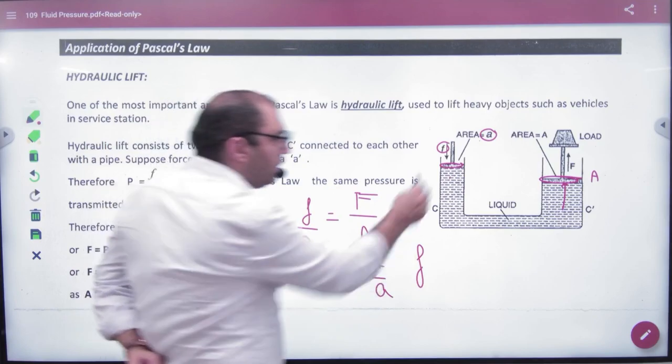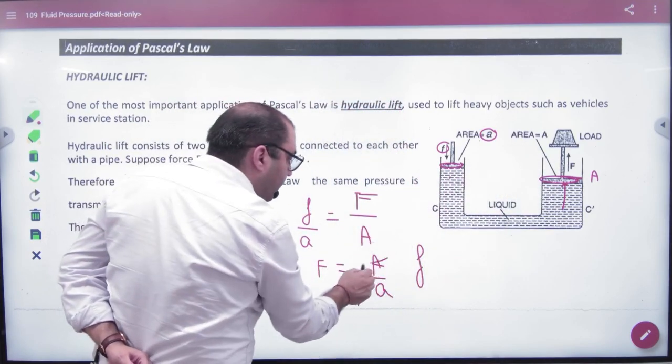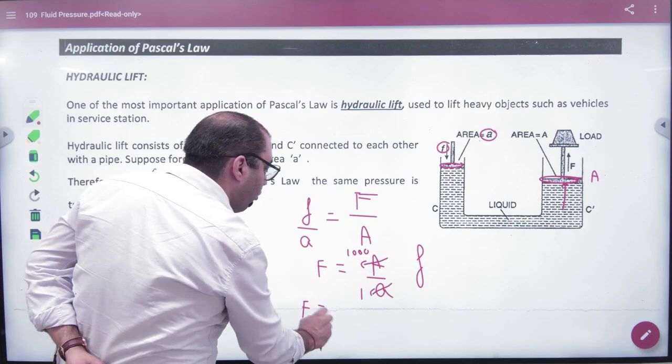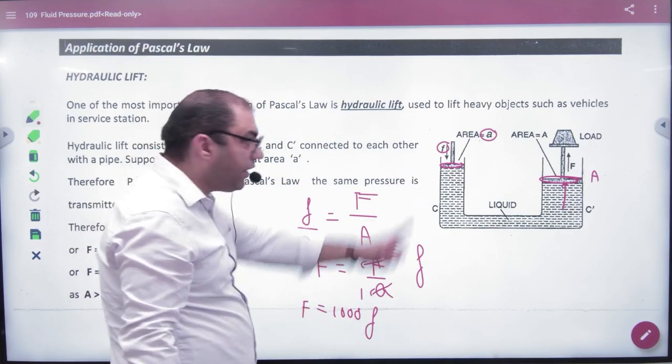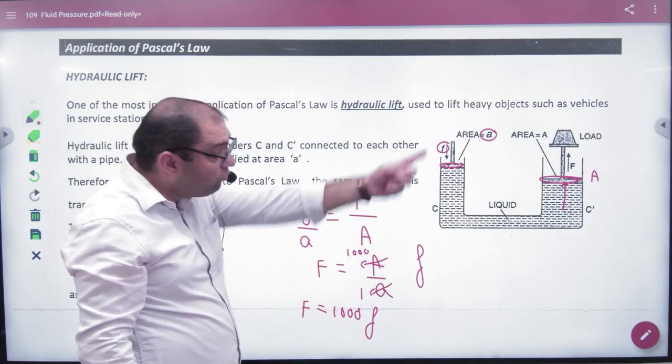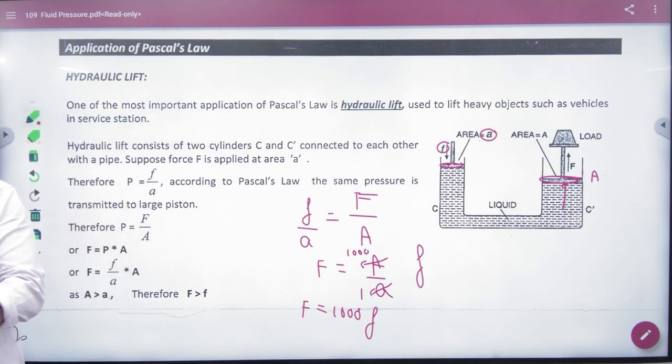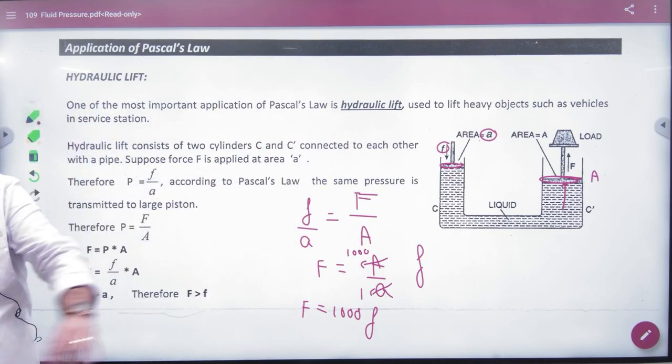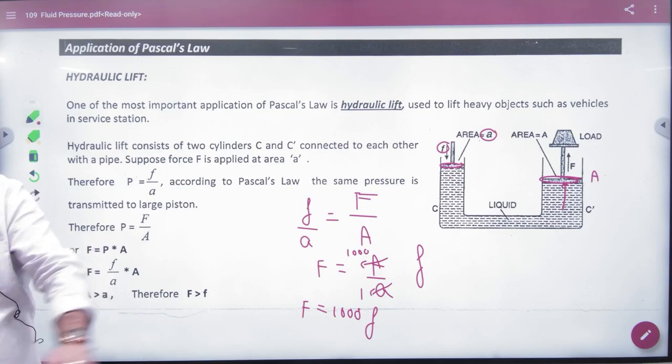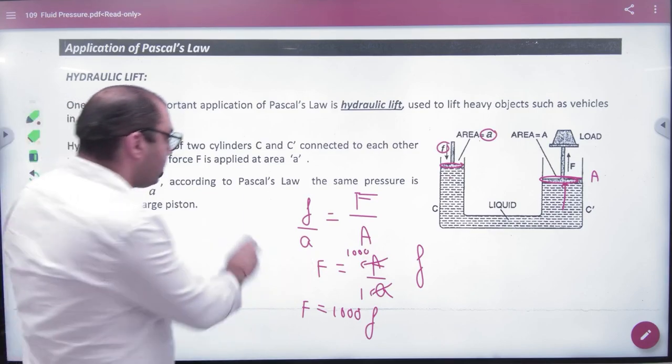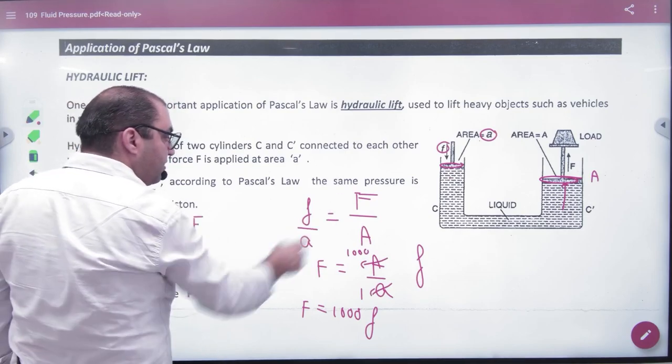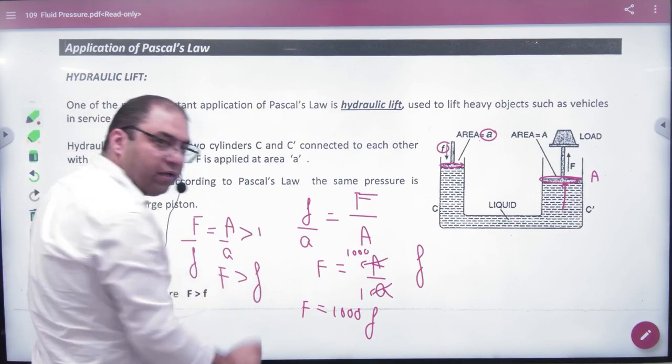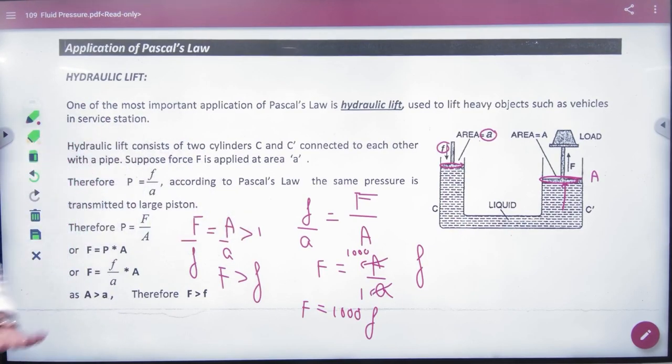Now imagine, if you have made this area 1000 square meters and this is 1 square meter, think about how much your force is multiplied. If you are putting only one newton force here, and the area ratio is 1000, then 1000 times force is there. You put 10 newton force, you get 10,000 newton force. This is the idea of how force multiplication works. F by f equals A by a. Since capital A is bigger than small a, capital F value is bigger, and how much depends on your area.